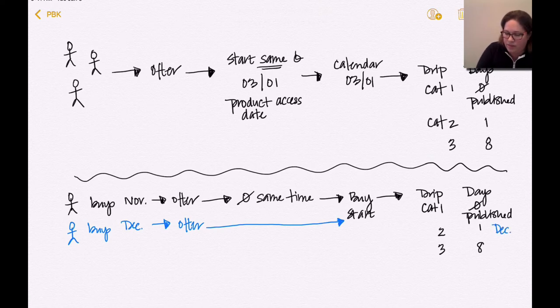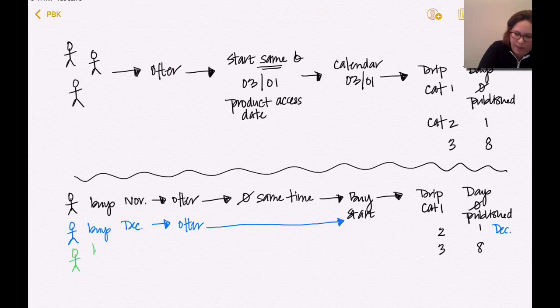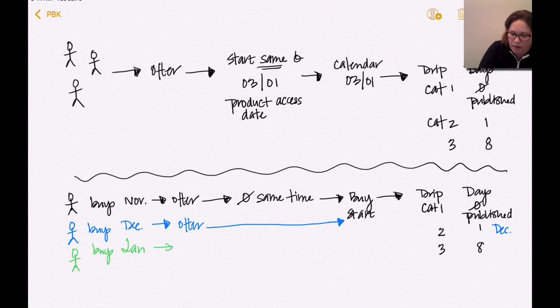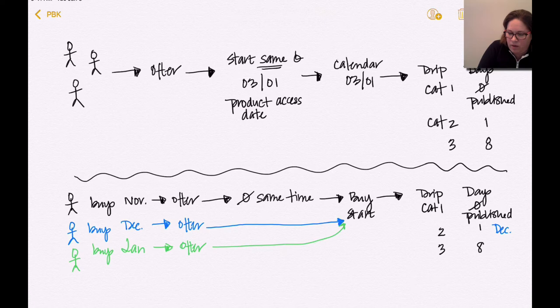Now, someone else buys, and these can all be happening on different days, obviously. They buy in January. They buy the same offer. Here we go. When they buy, they start. So they are going through drip in January. That is totally different than our first one.